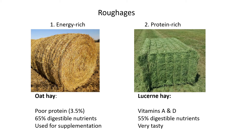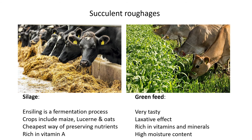For protein-rich roughage, the example is lucerne hay, which is very high in protein. It has vitamins A and D, which are good for animals, and 55% digestible nutrients. There are fewer digestible nutrients because of the higher protein content. Lucerne hay is also very tasty for animals, so if given a choice between oat hay and lucerne hay, animals would choose lucerne every time.